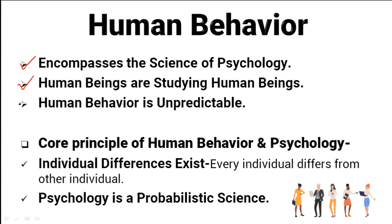The second point is that human behavior is unpredictable — humans act or behave in unpredictable ways. The core principle in the study of psychology is that individual differences exist: every individual differs from others. That is why we are all different, and it becomes an interesting science where the person being studied and the person studying are both of the same species. Compared to other more accurate sciences, psychology is a more probabilistic science.